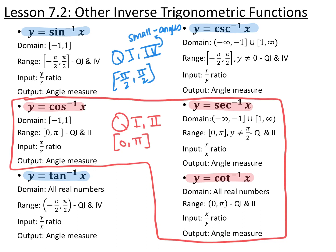Lesson 7.2 is other inverse trigonometric functions. We're going to build on what we talked about in 7.1. This first slide is a reminder of the six inverse trig functions, their domains and ranges, and their inputs and outputs. For inverse trig, your input is whatever ratio you're looking at, and your output is your angle measurement. The domains are the range of the original trig functions, and the ranges are based on how we limited the original trig function to make it one-to-one.